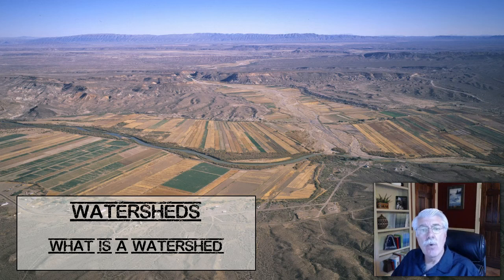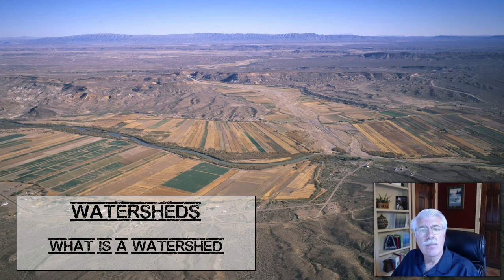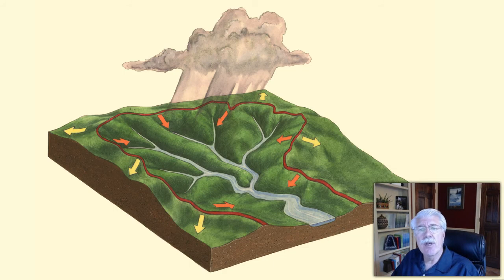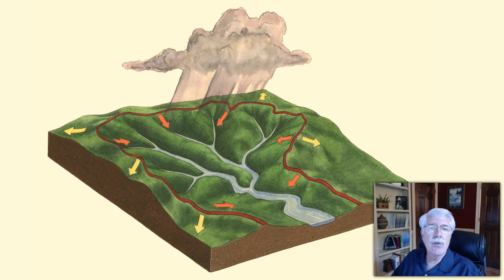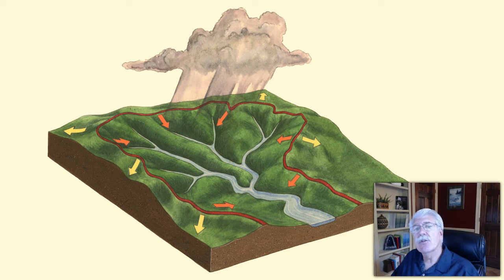It's usually difficult to see a watershed unless you're standing on top of a hill or looking down from an airplane. Then you can see all the hills and valleys that drain water into a stream. You can see all the streams flowing into rivers. You can see where rivers flow into lakes, bays, and estuaries.